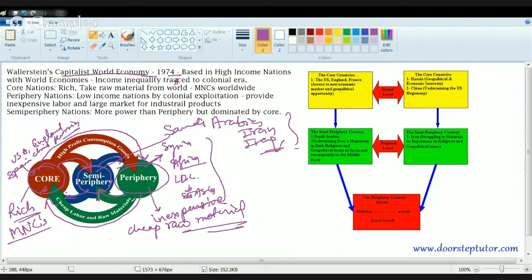So what Wallerstein basically tried to explain was, if any country wants to flourish, it would be only the high income group. High income group nations or core nations would flourish very well. And they would flourish on the expense of the peripheral nations who under colonial era were exploited. So peripheral nations, exploitation led to prosperity of the core nations.